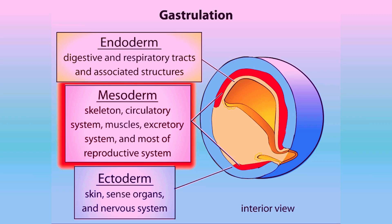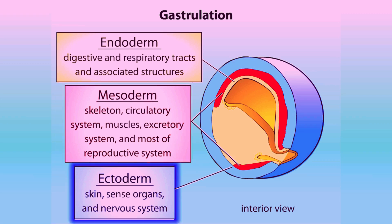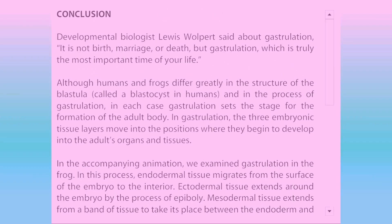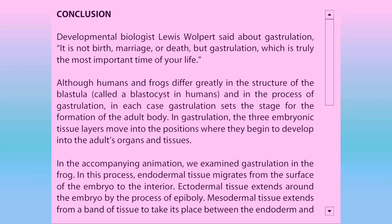The ectoderm gives rise to the skin, sense organs, and nervous system. That concludes our understanding of gastrulation in Xenopus frog.